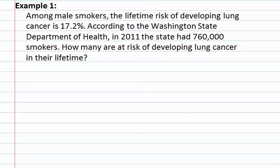Example 1: Among male smokers, the lifetime risk of developing lung cancer is 17.2%. According to the Washington State Department of Health, in 2001 the state had 760,000 smokers. How many are at risk of developing lung cancer in their lifetime? Remember we must set this up as a proportion in which we have 'of' and 'is.' Remember that it is: is over of equals percent over 100. We first must decide what is the 'is' and what is the 'of.'